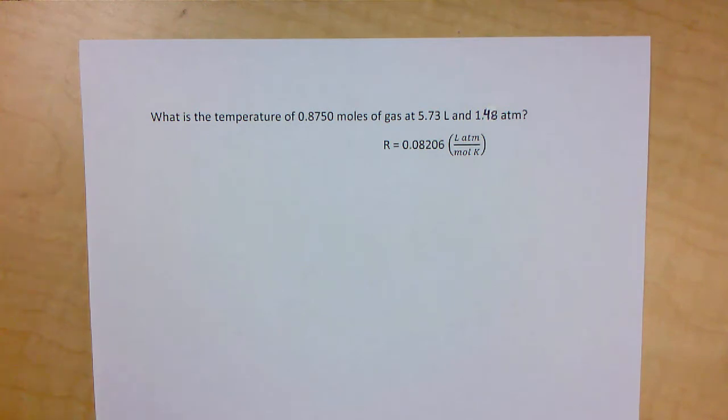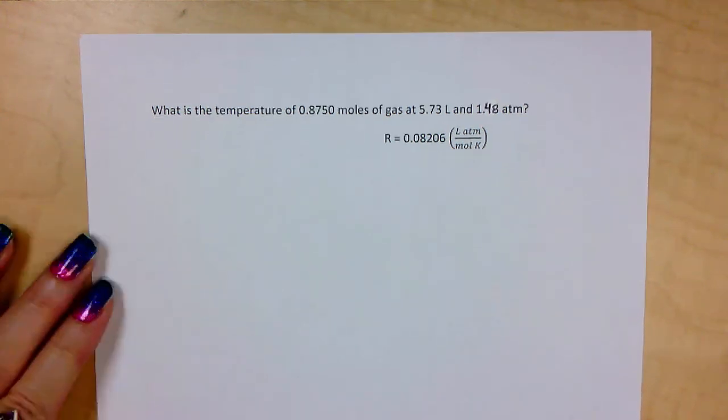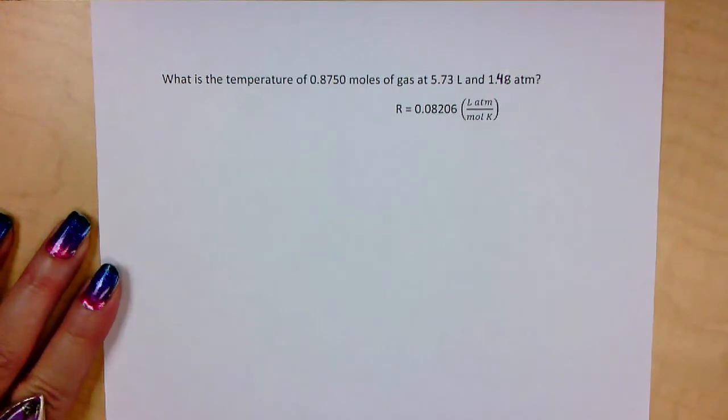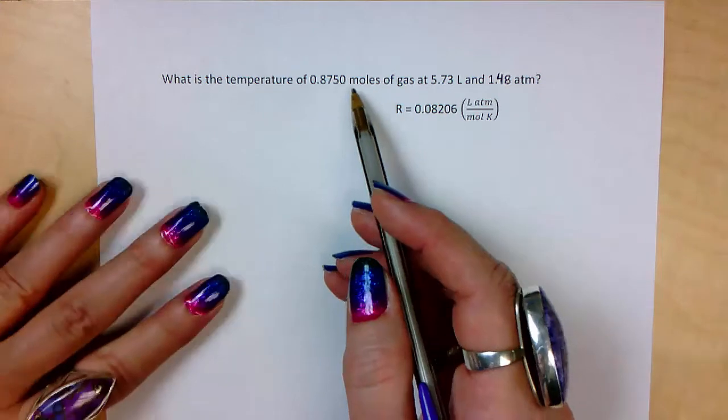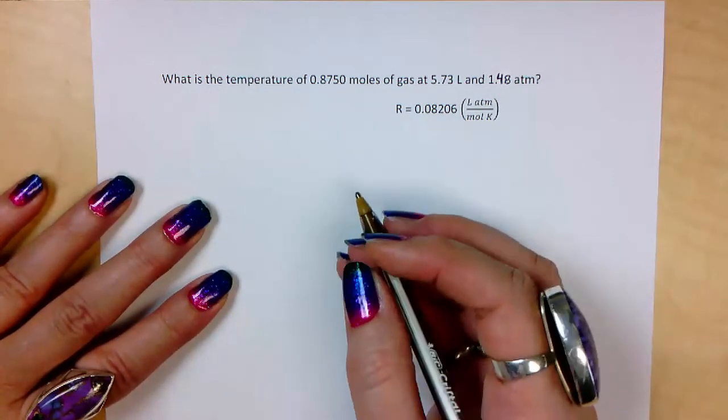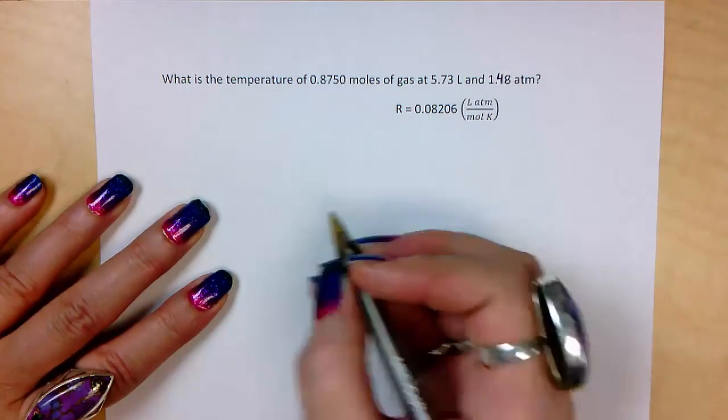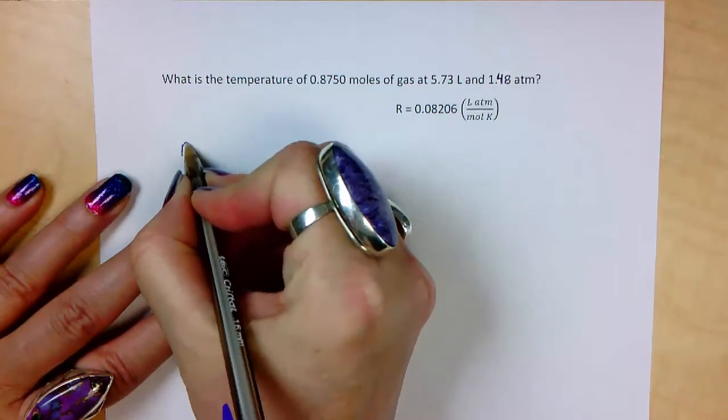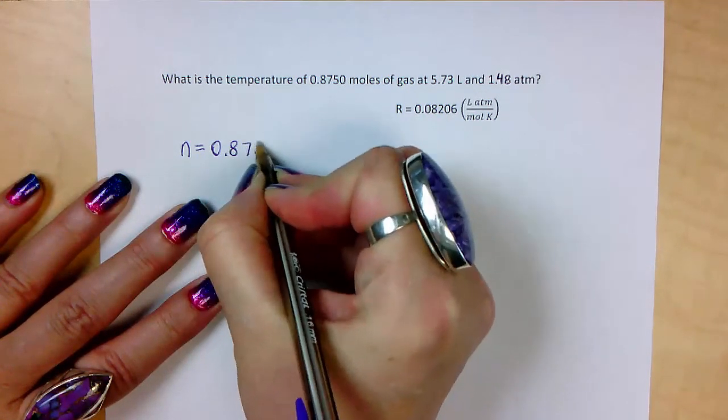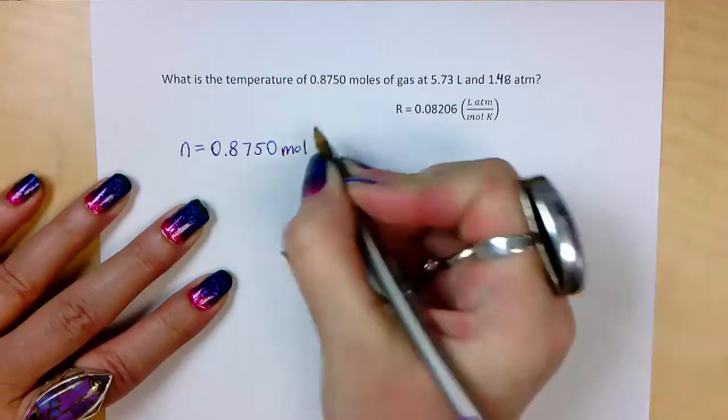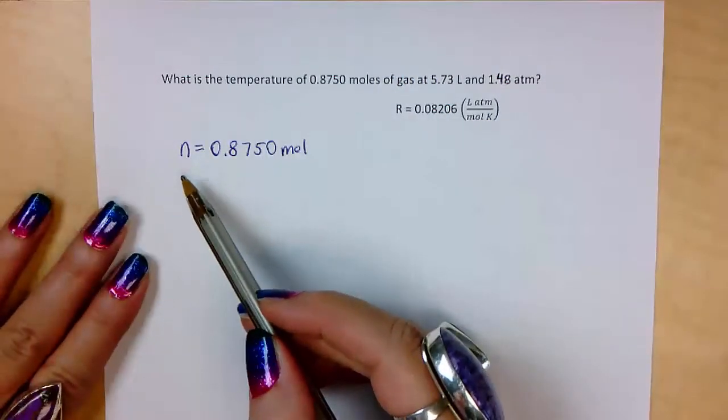So this is a gas law problem. We have some variables that deal with gases. Let's identify our variables. We have 0.8750 moles. What is moles? Well, that is the symbol n. So we have n equals 0.8750 moles.